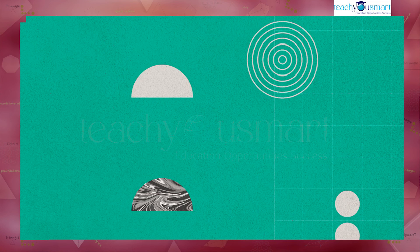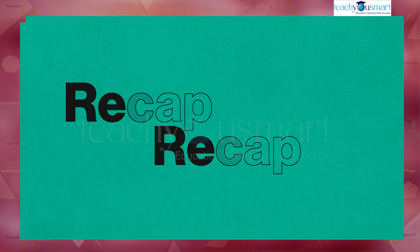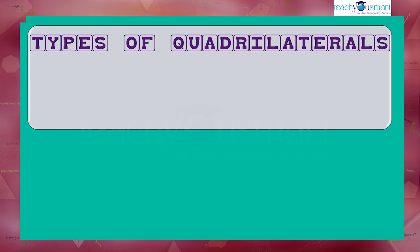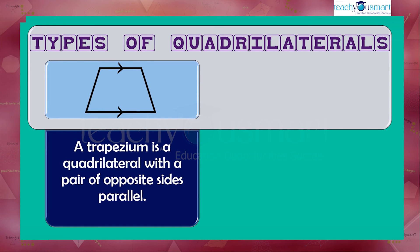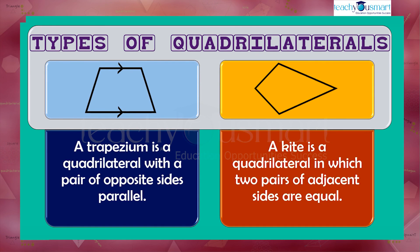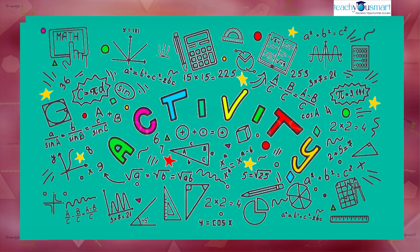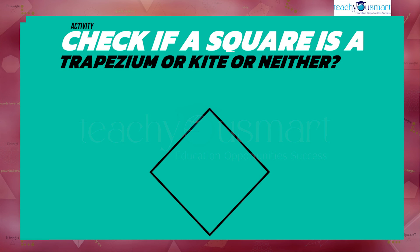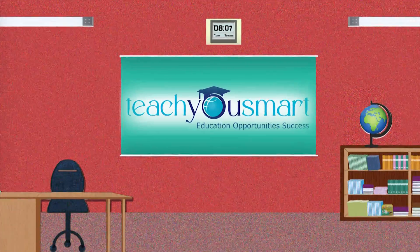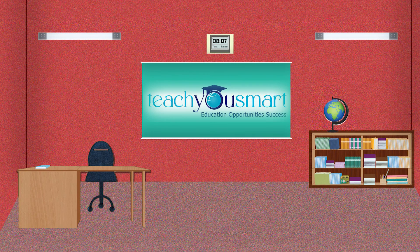Let's have a quick revision. Today we learned about two types of quadrilaterals — trapezium and kite. Before winding up, here is a simple activity: check if a square is a trapezium, a kite, or neither. That's all for now, see you all in the next class.